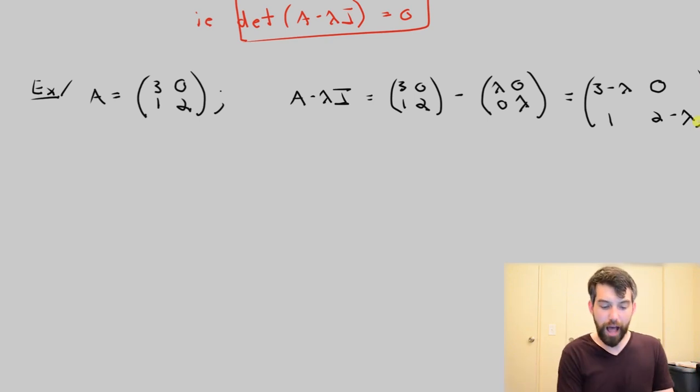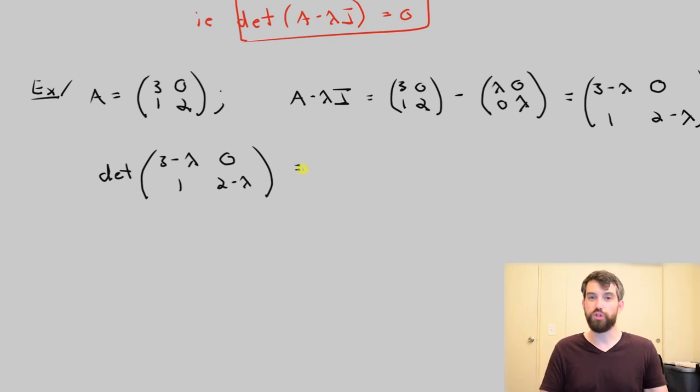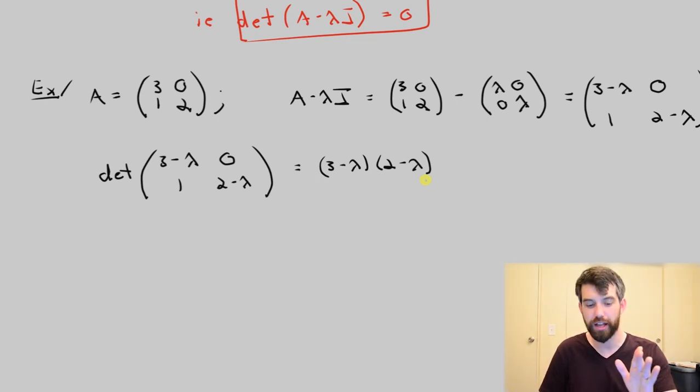So in other words, if I want to come along here and compute the determinant, the thing I'm computing the determinant of is this matrix, 3 minus lambda, 0, 1, 2 minus lambda. And I know how to take a determinant of a 2 by 2 matrix. It's just going to be the main diagonal minus the off diagonal. So this is going to give me 3 minus lambda times 2 minus lambda. And then the off diagonal is 0 times 1, so I don't even subtract anything.